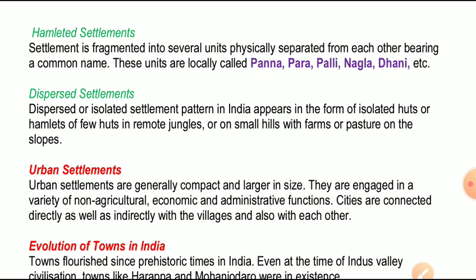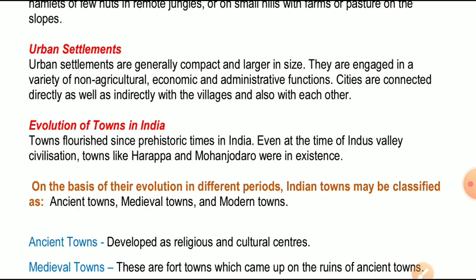Next is dispersed settlement. Dispersed or isolated settlement pattern in India appears in the form of isolated huts or hamlets or few huts in remote jungle or on small hills with farms or pastures on the slopes. यह बिखरी हुई बस्तियां होती हैं - छोटी-छोटी बस्तियां जो basically जंगलों में या पहाड़ी ढालों पर खेतों या चारागाहों के समीप पाई जाती हैं।